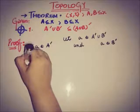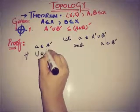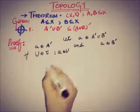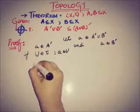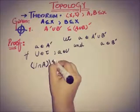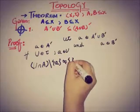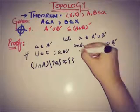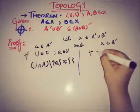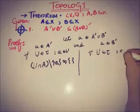For all open neighborhoods U of point a, the intersection of U and A, excluding the point a itself — that is, (U∩A)\{a} — is not empty, since a is an accumulation point of A.